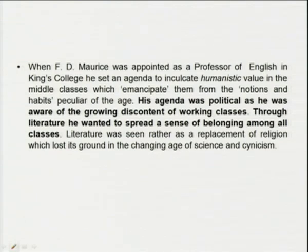Literature should always be disinterested, as humanism had said, and it should never have an overt agenda of trying to change someone. When F.D. Maurice was appointed as a professor of English at King's College, he set an agenda to inculcate humanistic values in the middle classes, which would emancipate them from habits peculiar to the age, allowing them to move away from the ills of the social system. His agenda was political — he was aware of the growing discontent of the working classes. Through literature, he wanted to spread a sense of belonging among all classes.